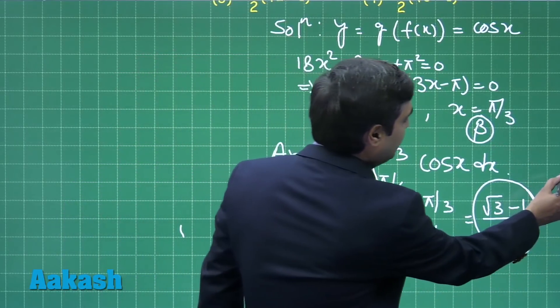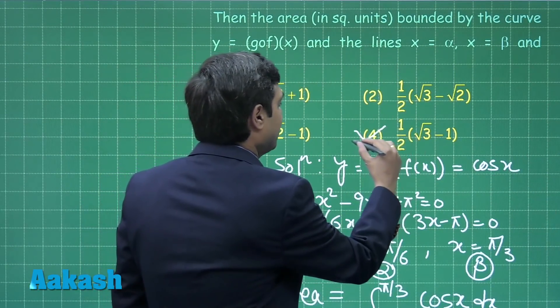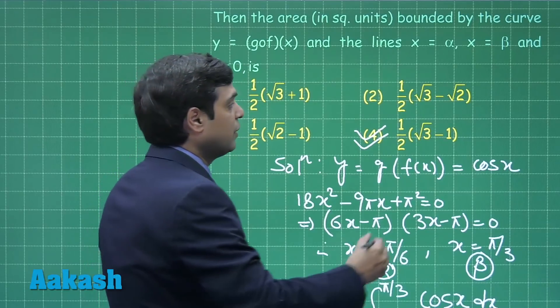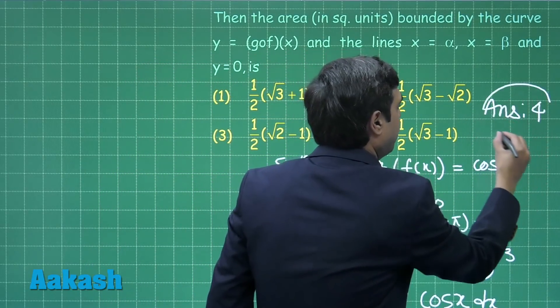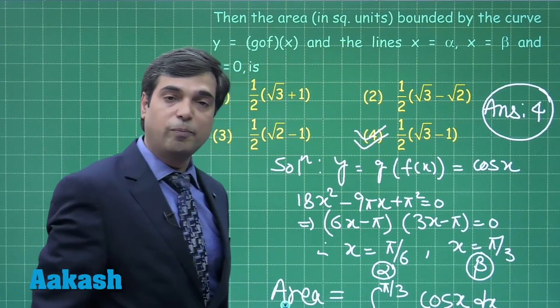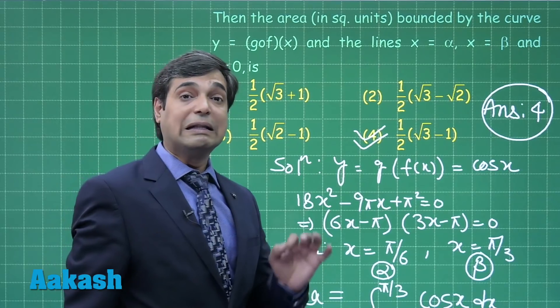Hence, the required area, when we look at the options part, we can see the correct answer is option number 4. Correct answer is 4. This is clear how we obtained this area. Let us move to the next one, that is question number 37.